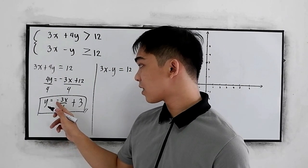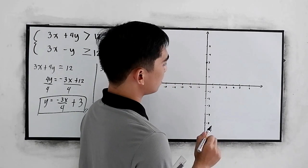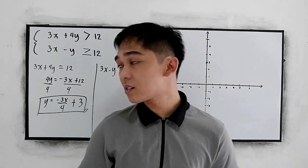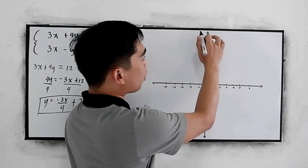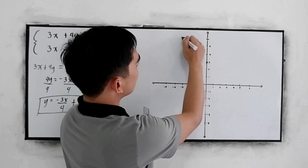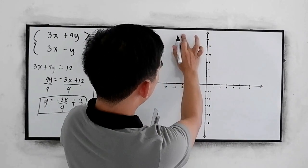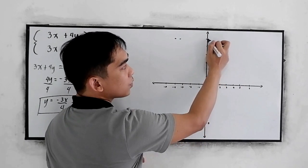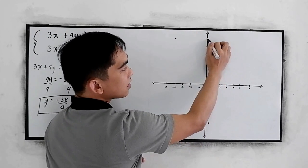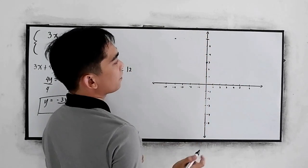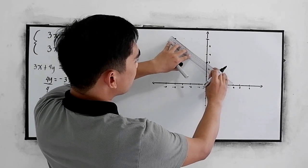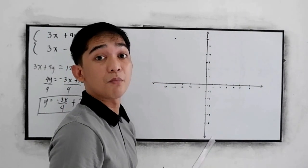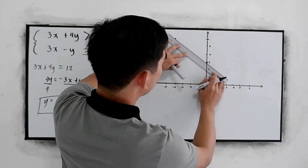Plot the y-intercept at positive 3. Then rise negative 3 (go up 3) and run 4 going right. Also go left 4 from the intercept. Connect the points. Since this is greater than, we use the broken line.